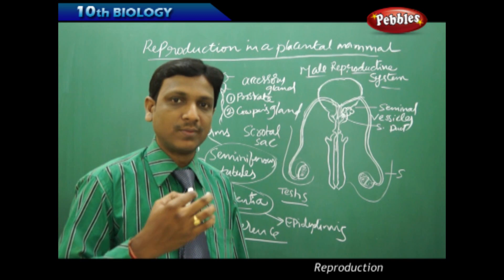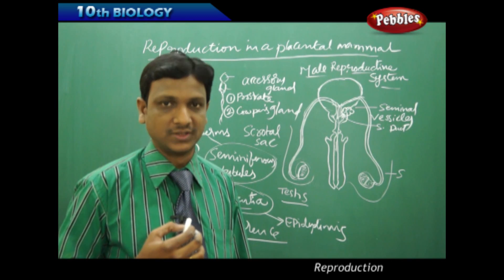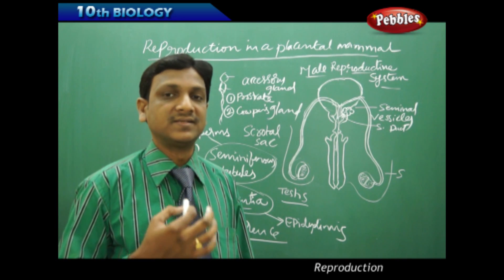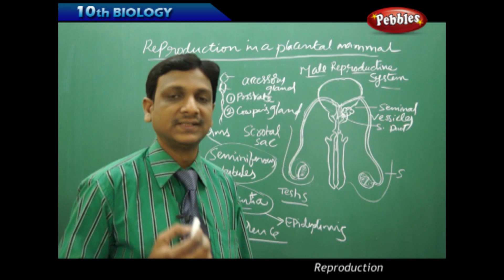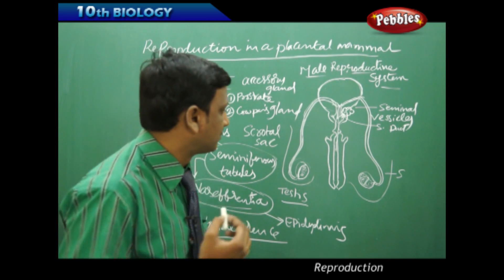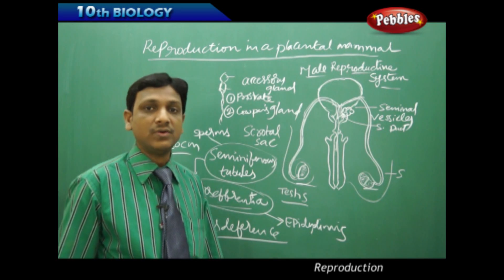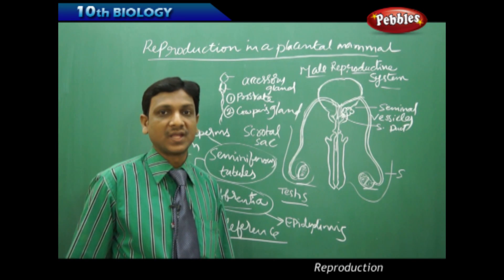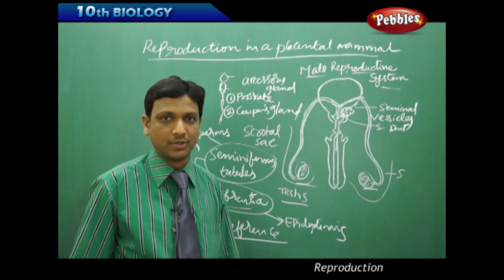The testes secrete testosterone, which helps in the process of reproduction by bringing about secondary sexual characters in males, as well as for the complete development of the reproductive organs and production of male reproductive cells. The testes are the major reproductive organs in males. Now let us look at the female reproductive system and the contribution of its various parts to the process of reproduction.